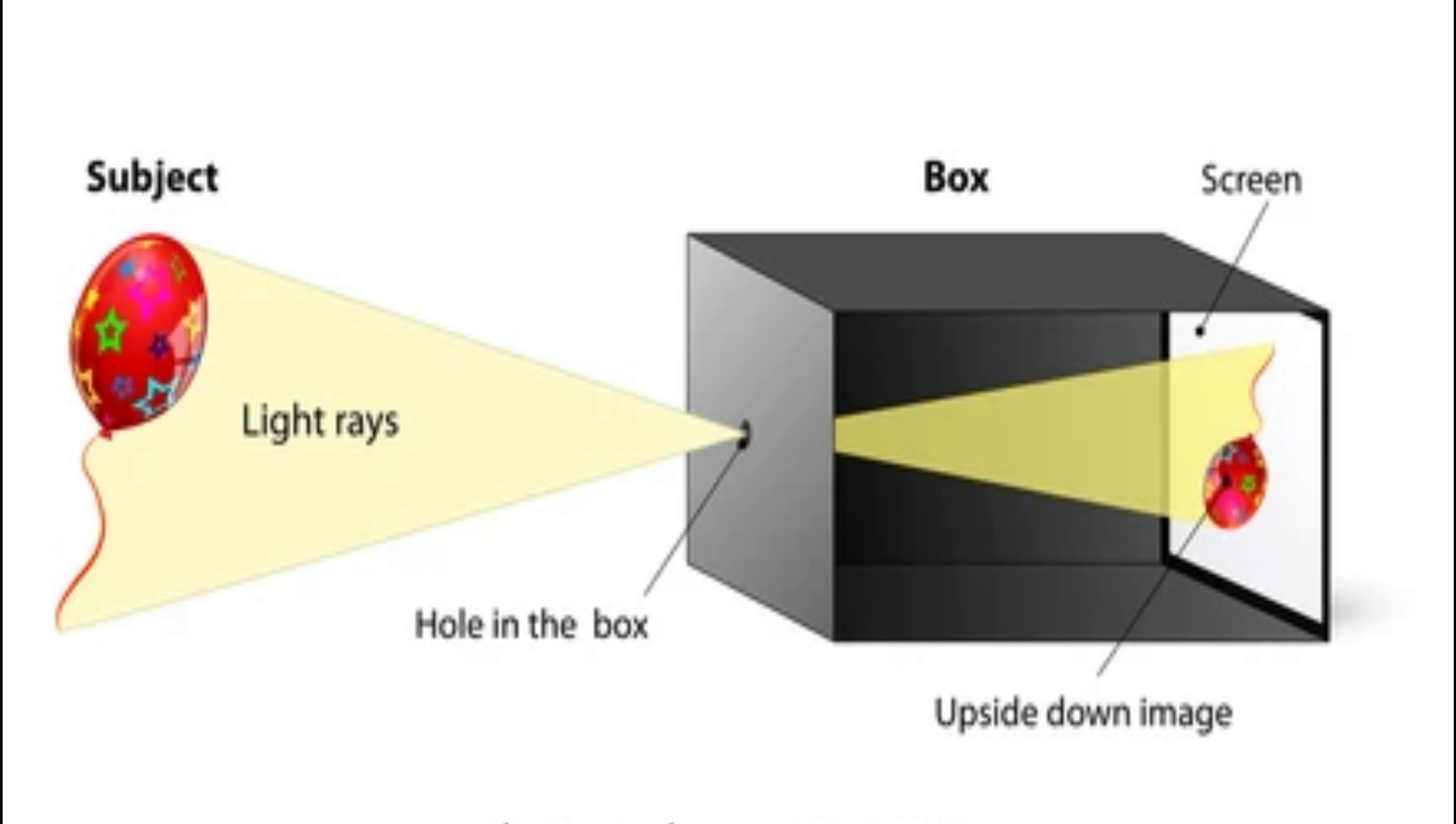The image formed is inverted and smaller in size compared to the original object. Now let's check it. This is our opposite building. Can you see the building upside down? You will get a clear view than what you see in this video.